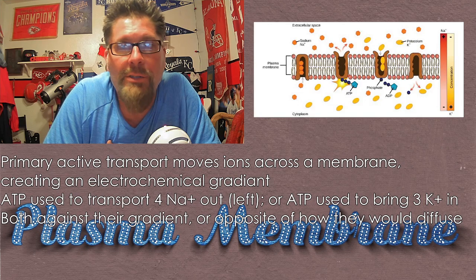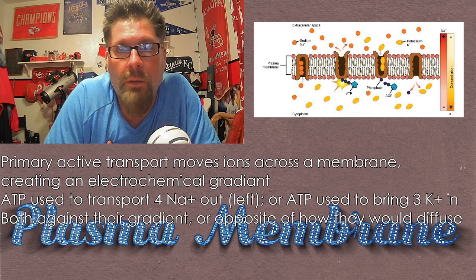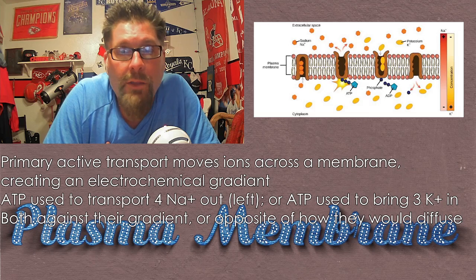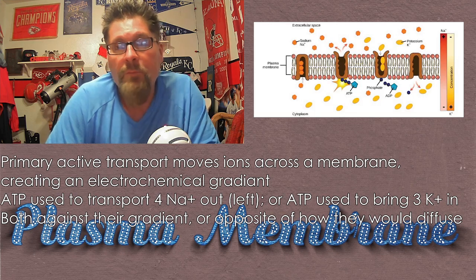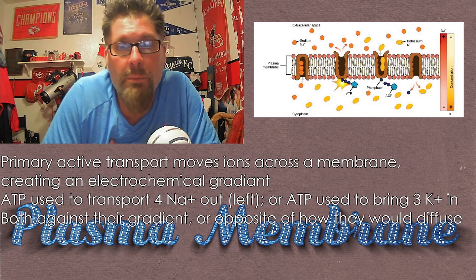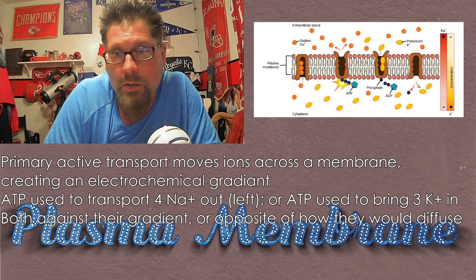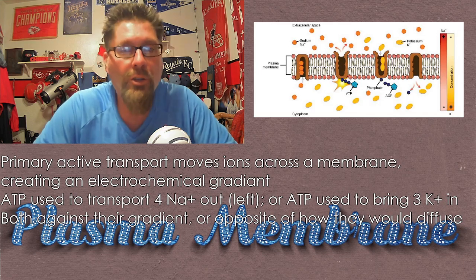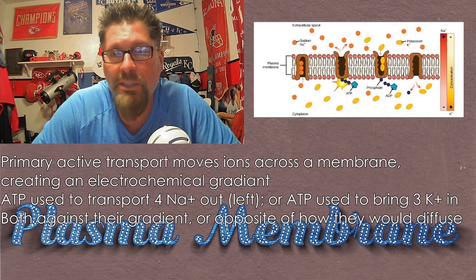The way to think about this is that an ATP molecule holds a lot of energy, but it's the smallest energy molecule the cell has. So when that molecule is separated and the energy is released, the energy needed to complete primary active transport is a lot less than the energy expended. So the cell is going to try to take that excess energy and use it for secondary active transport — in other words, bring something else in.